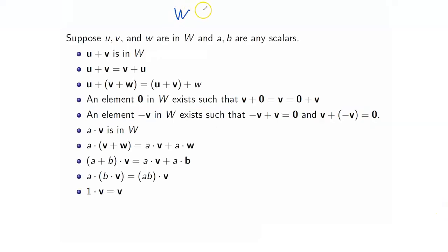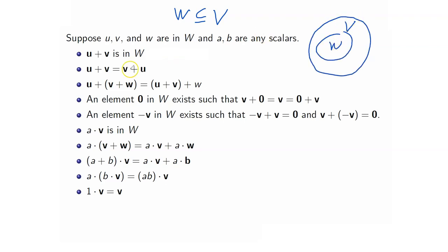For instance, W here is a subset of V. This means that W is contained inside of V. Here are the properties that must be satisfied by W for it to become a subspace of V. Take note that some of these properties are inherited by W from V. For example, commutativity — U and V here are in W but they are also in V, and in V we know that addition is commutative.